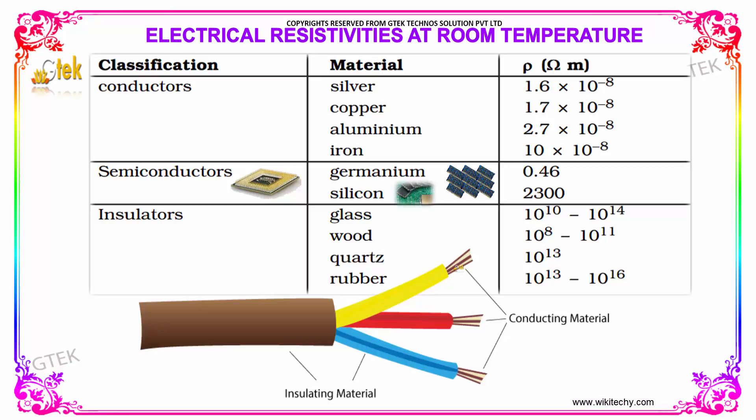You are able to see that electricity is passed through the conducting material. And electricity should not get dissipated through the part that is covered by an insulating material.